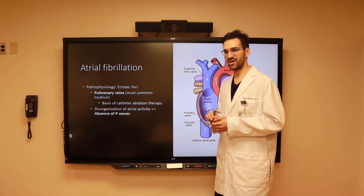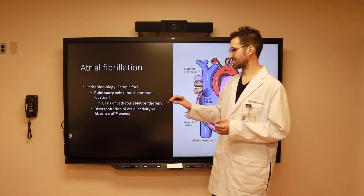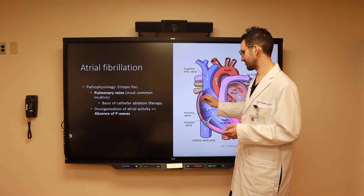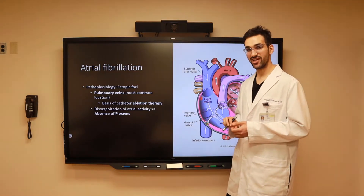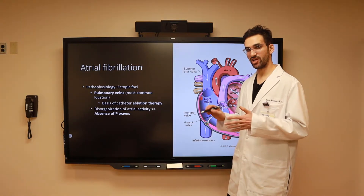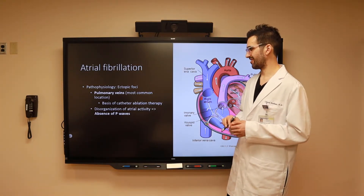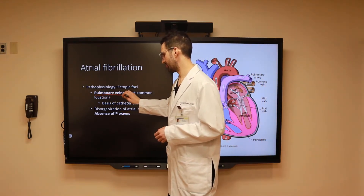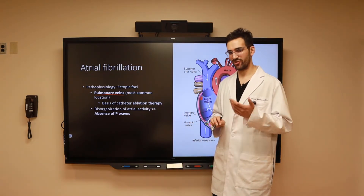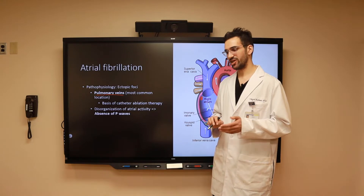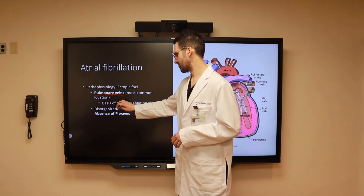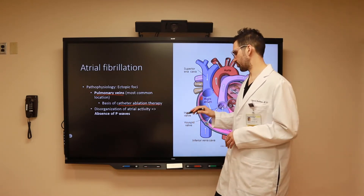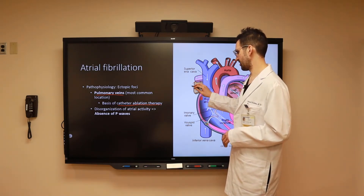The pathophysiology of atrial fibrillation involves an ectopic focus other than the sinoatrial node, which is classically located in the right atrium. In atrial fibrillation, this can come from anywhere else, often in the upper chambers of the heart. Classically, the most common location for atrial fibrillation to originate is the pulmonary veins. This is the basis of catheter ablation therapy, which addresses the underlying pathophysiology by ablating the pulmonary veins where this abnormal rhythm originates.